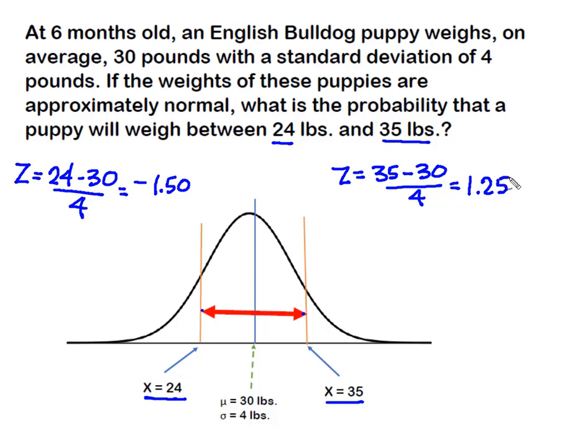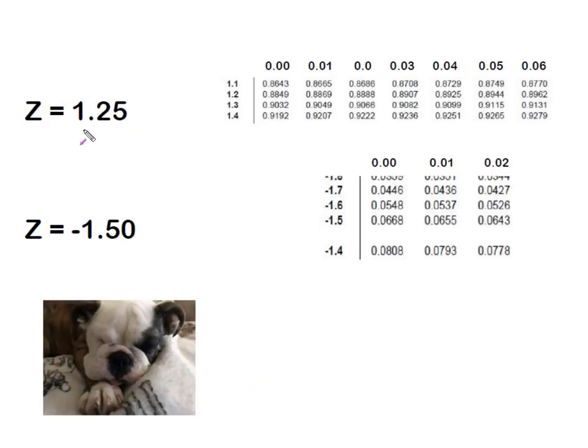And these are the two values that we're going to look up in our cumulative normal distribution table. So here we have our normal distribution tables. I'm going to look up my z of 1.25 first. So I have 1.25, I'm going to come all the way over to where it intersects with the 0.05, and then down here I have a negative 1.5, and that's 1.50.